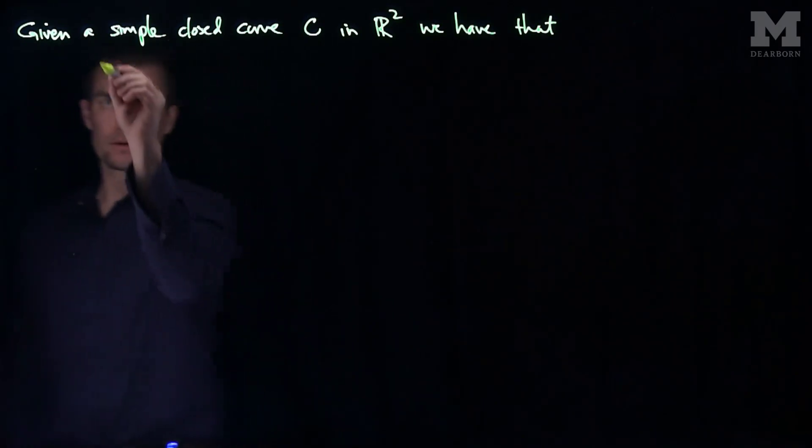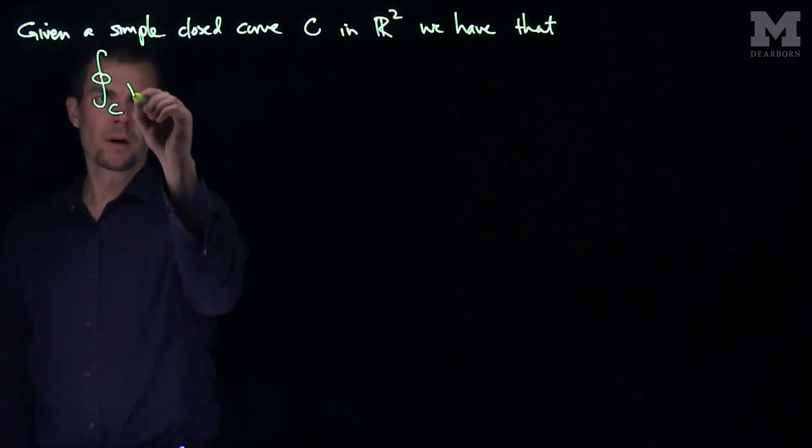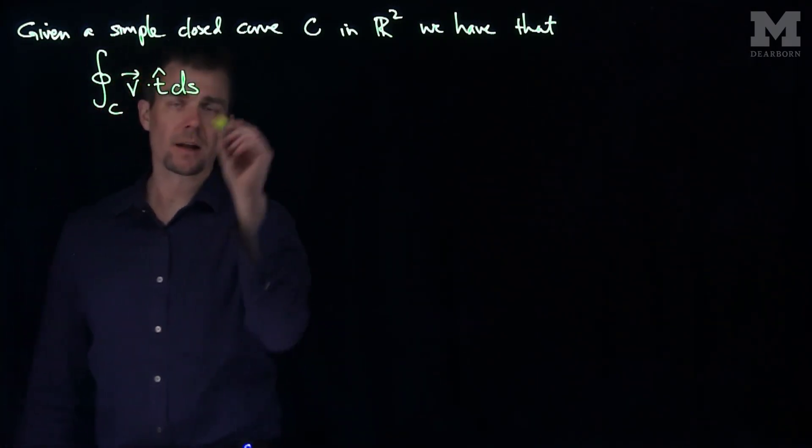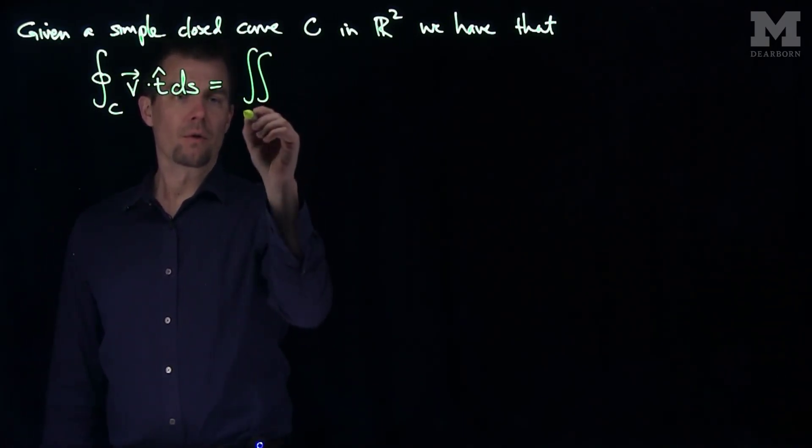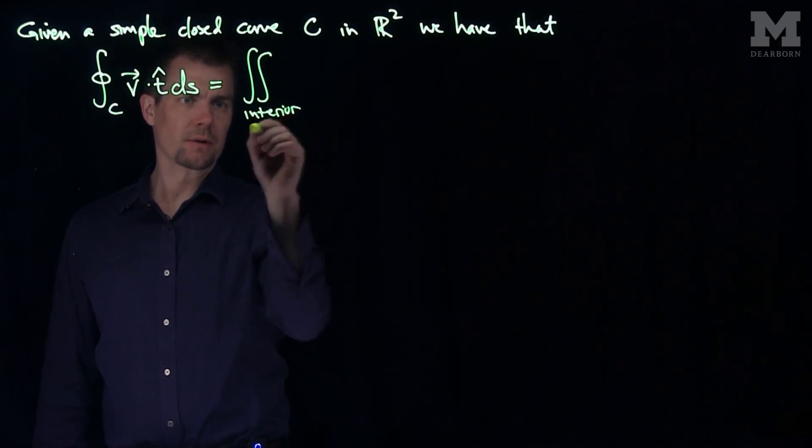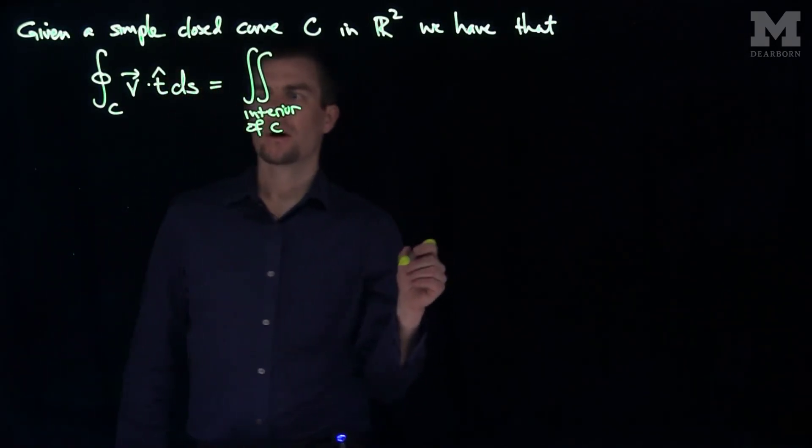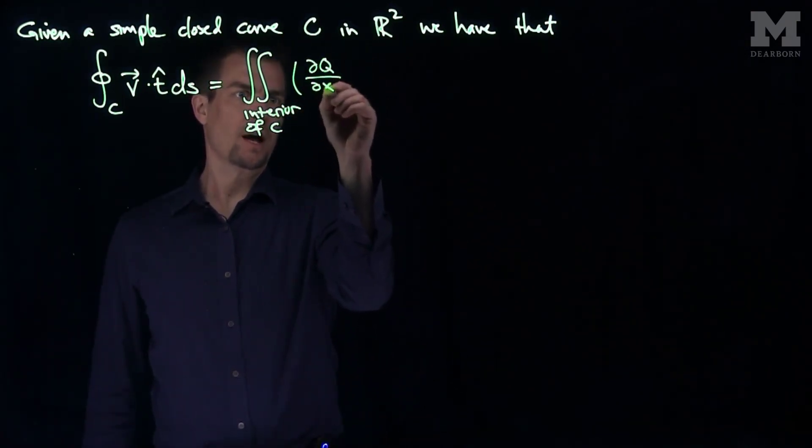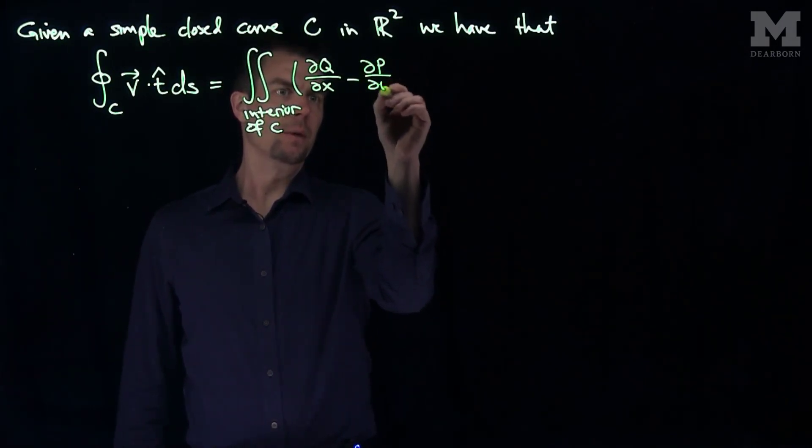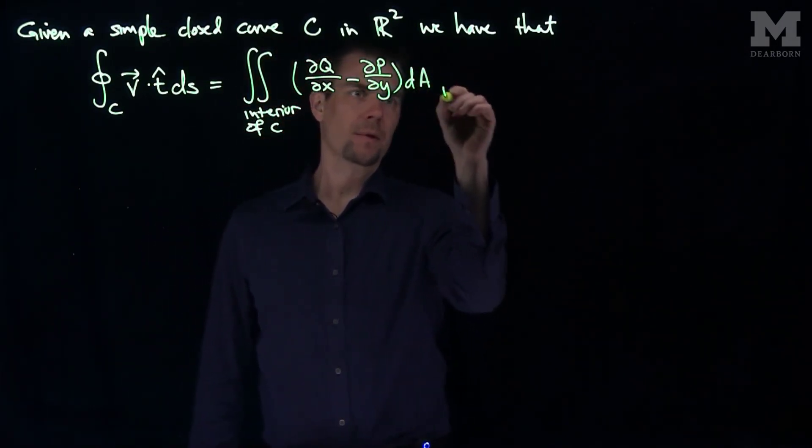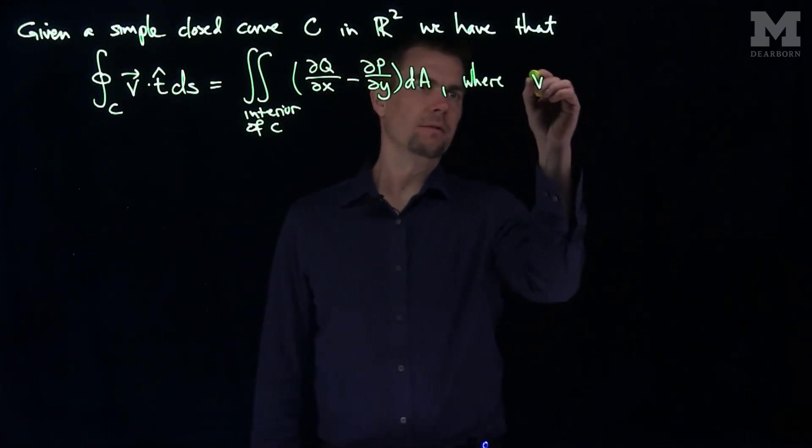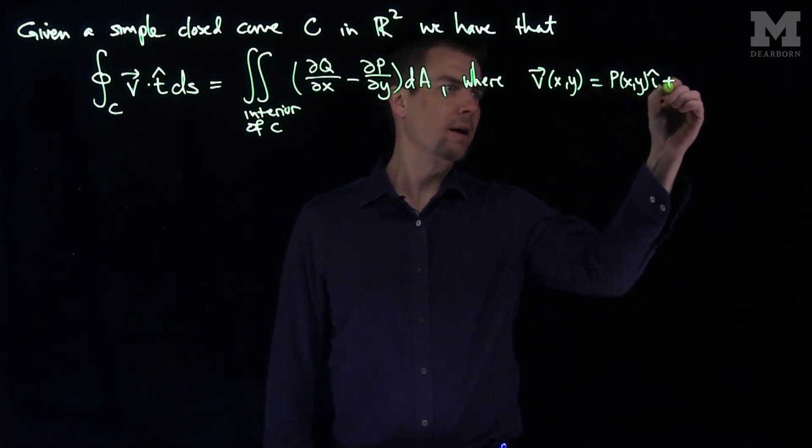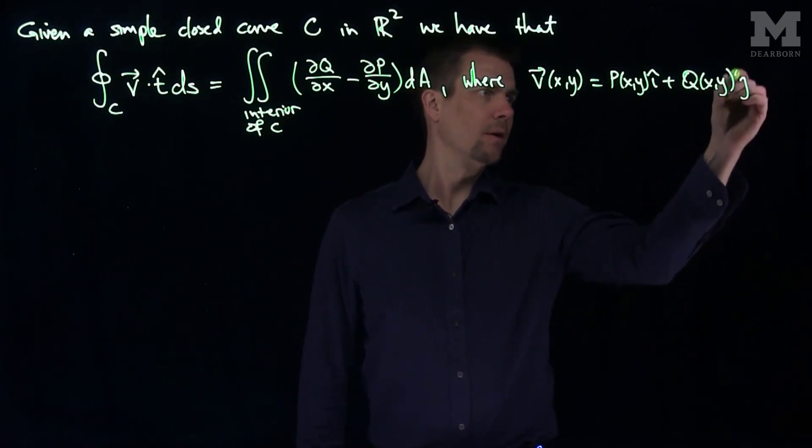The flow integral over the closed curve C of a vector field V dot T-hat, the unit tangent vector to the curve, dS, the arc length element, is equal to the double integral over the interior of the closed curve C of partial Q partial x minus partial P partial y dA, where the vector field V of (x,y) is P(x,y)i-hat plus Q(x,y)j-hat.